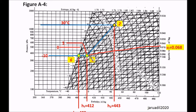Then from 1 to 2, you draw a constant entropy line. The constant entropy lines are the diagonal curves going upward. Draw the constant entropy line from point 1. Then, the condensing temperature of 30 degrees Celsius — locate 30 degrees, which is between 20 and 40 degrees. Wherever the constant entropy line crosses the 30 degrees Celsius line is point 2.